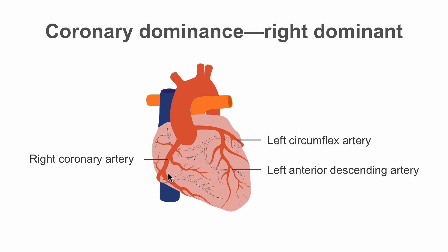A patient is said to have right coronary dominance if this arises from the right coronary artery, and left coronary dominance if this arises from the left circumflex artery. Let us look at this concept a little bit more.